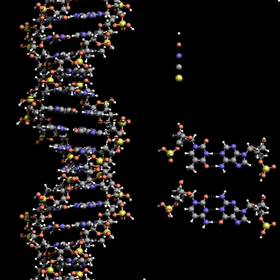The nitrogenous bases of the two separate polynucleotide strands are bound together according to base pairing rules — A with T and C with G — with hydrogen bonds to make double-stranded DNA.